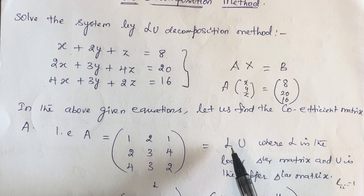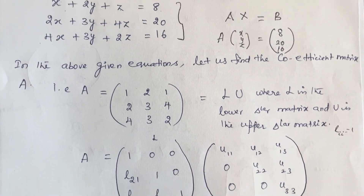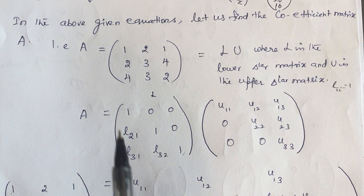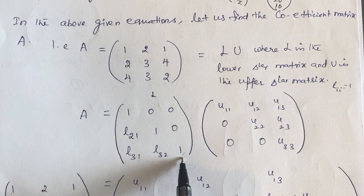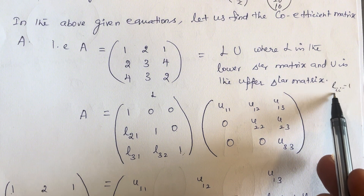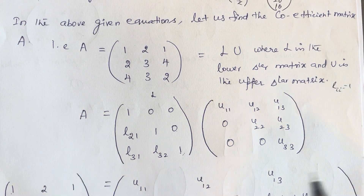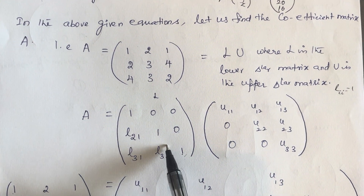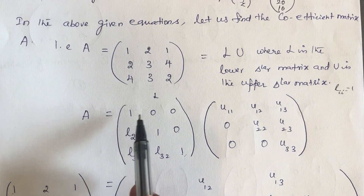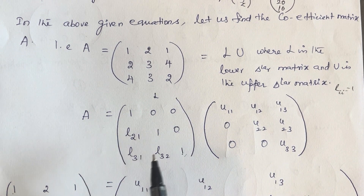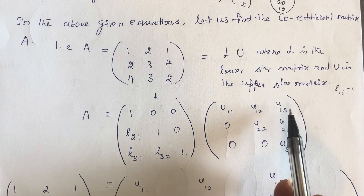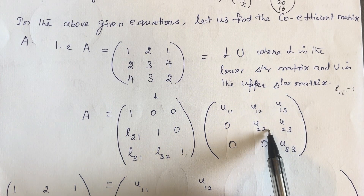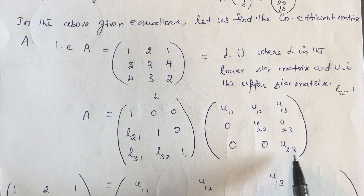For the lower triangular matrix, I have taken all the diagonal values as unit values, that is 1. So L11 = 1, L22 = 1, and L33 = 1. So L takes the form [1, 0, 0; L21, 1, 0; L31, L32, 1]. And for the upper triangular matrix it is going to be [U11, U12, U13; 0, U22, U23; 0, 0, U33].